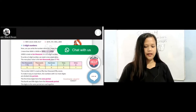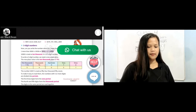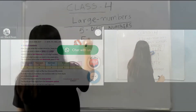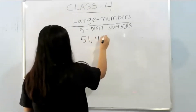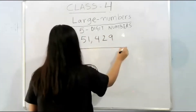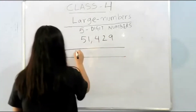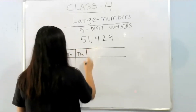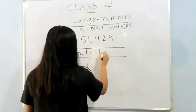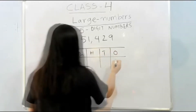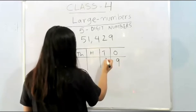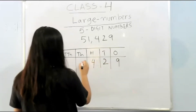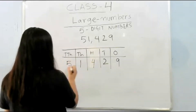Now we learn how to read five-digit numbers using the place value chart. Let us read these numbers: 5, 1, 4, 2, 9. Ten thousands, thousands, hundreds, tens, and ones. In the ones place: nine. In the tens place: two. Hundreds place: four. Thousands place: one. And ten thousands place: five.